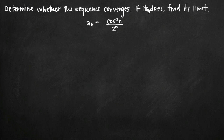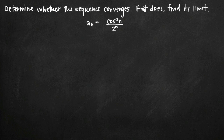That can be a little misleading because when it comes to sequences — and keep in mind that this has nothing to do at all with series; series are completely separate, this is for sequences only — we can almost reverse these directions. Because if we can find the limit of a sequence and that limit exists, then by definition the sequence converges. So these instructions could just as easily say: find the limit of the sequence if it exists and then use your answer to determine whether or not the sequence converges.